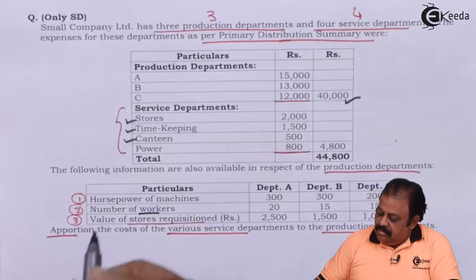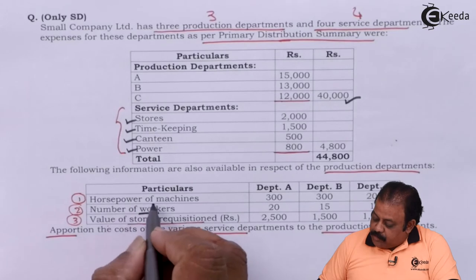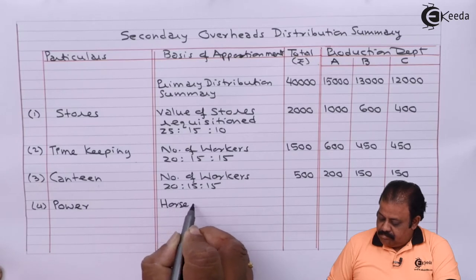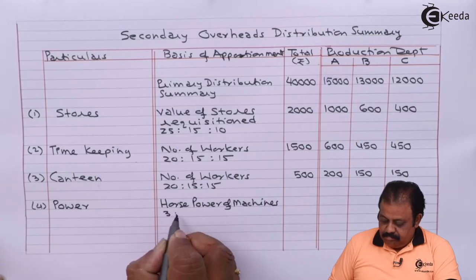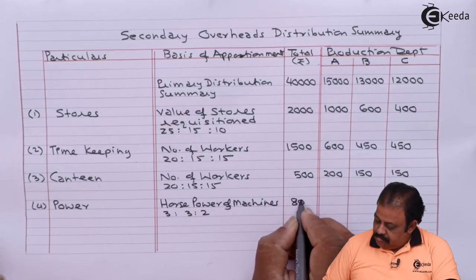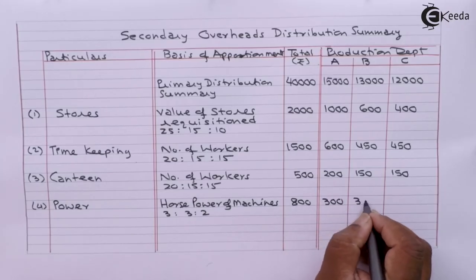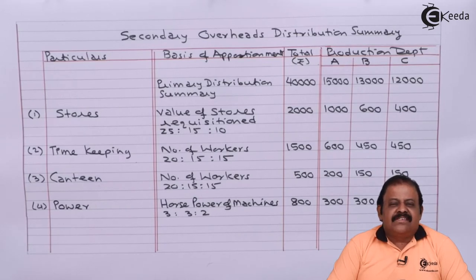Next we have power expense. This will be allocated based on horsepower of machines. Total expense is 800. So we have apportioned all service department overheads among production departments — this is called secondary distribution.